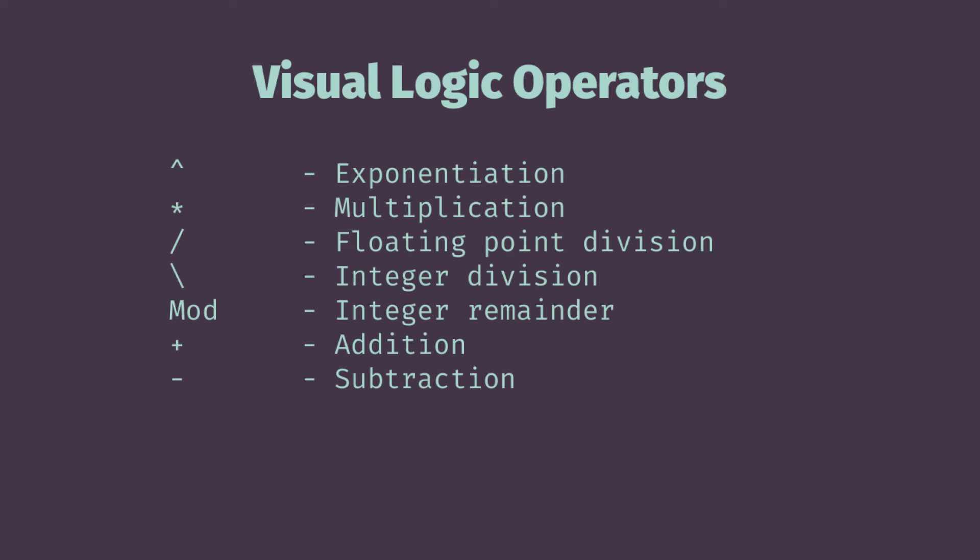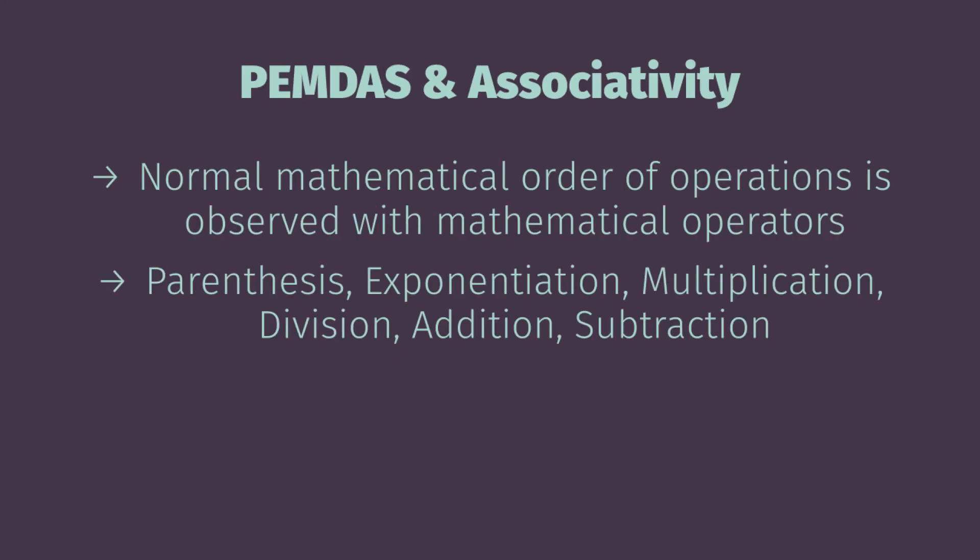Additionally, you're going to note that there are two operators for division. One of those operators provides us with a floating point answer and the other provides us with an integer answer. But first, we want to talk about order of operations and associativity. The normal mathematical order of operations is observed — parentheses, exponentiation, multiplication, division, addition, and subtraction. We can also use parentheses to reorder things, and we'll see a use of that in the programming sample coming up.